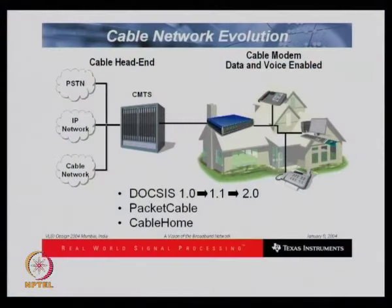Another evolution in the wireless area is cable networks. Through a cable modem, one can connect the IP network or cable network and PSTN directly to the home. Since cable offers the largest bandwidth, one prefers local area networks using cables. In the video market — from digital cameras to 3G phones, video DMA, network cameras, DVDs, and video surveillance — there are large spectrum applications requiring MPEG standards.